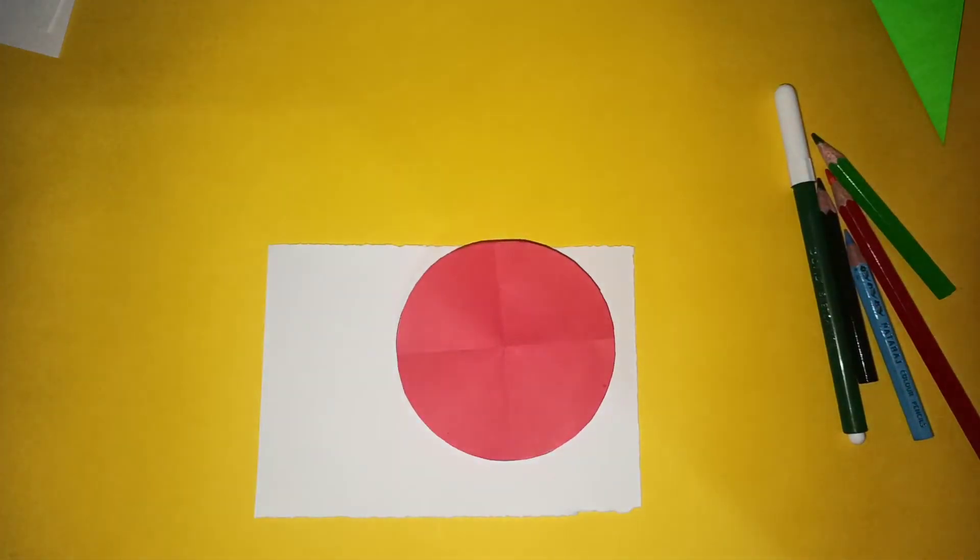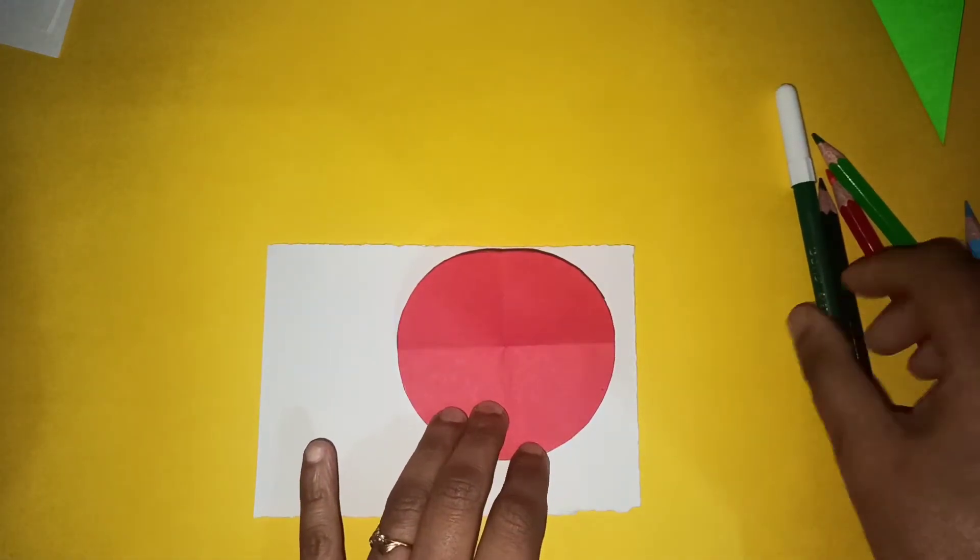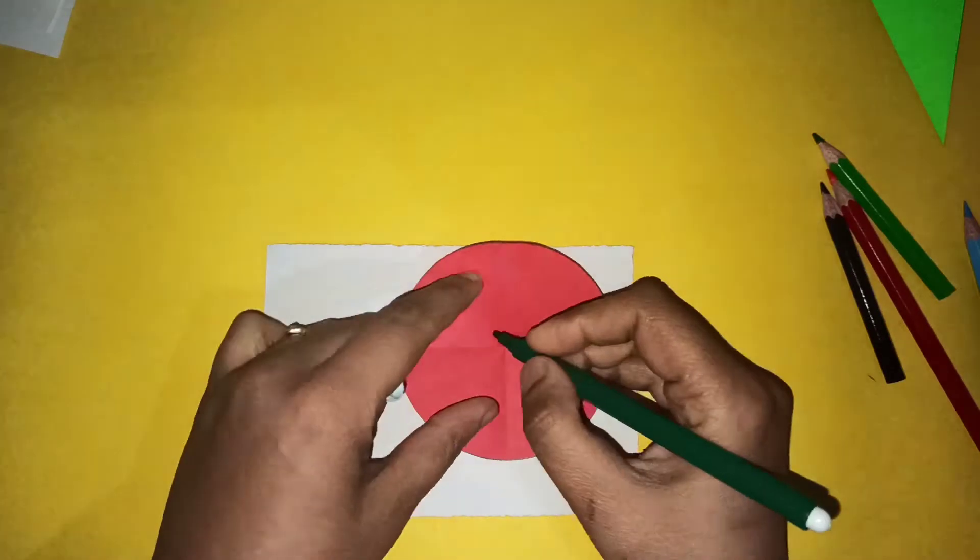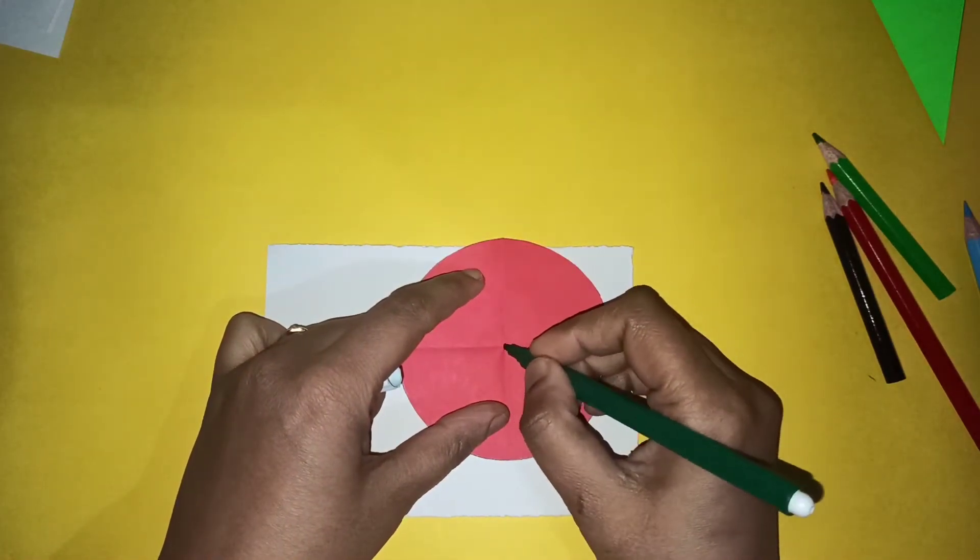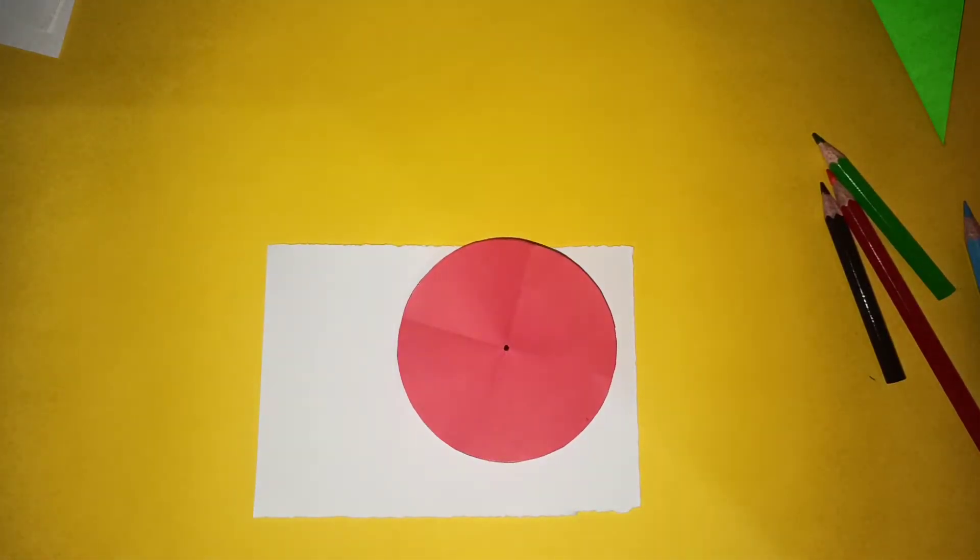This point is the center of the circle. I'm marking it with green color. So this is the center of the circle.